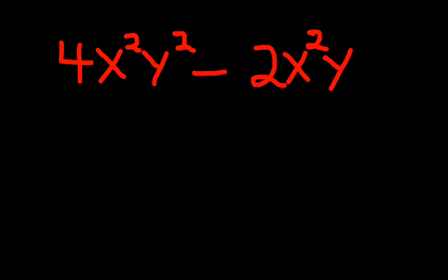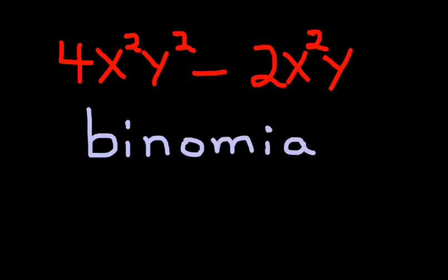If you have two terms like this, we call this a binomial. I like to think bicycle. A bicycle has two wheels, and it starts with that same prefix bi, which means two. This one has two terms, one term, two terms, separated by a minus sign in the middle. So this is a binomial.